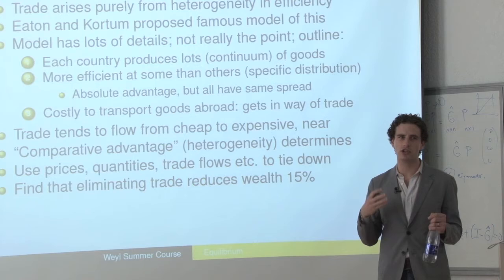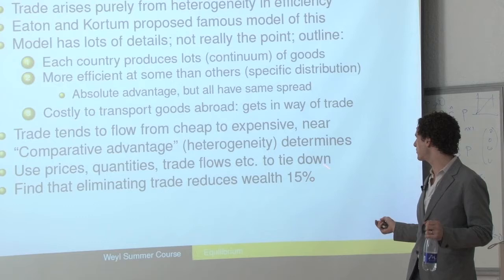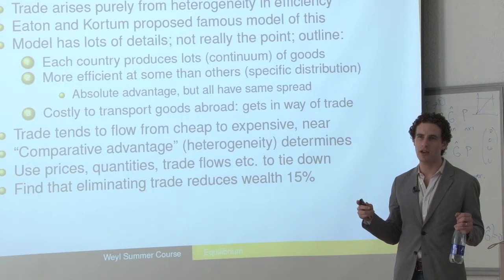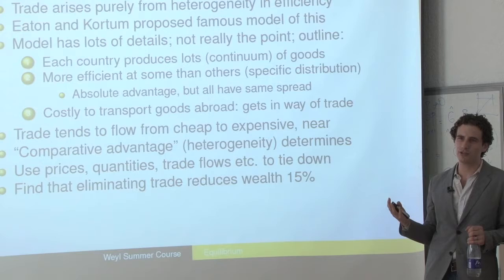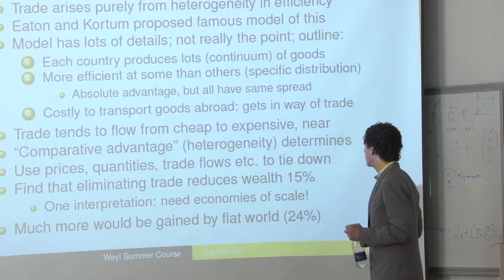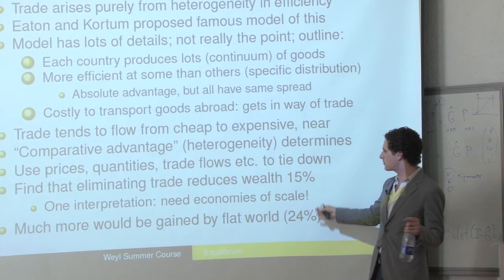That allows them to calibrate this model and calculate how much reduction in welfare we would get if there was no trade at all. They found a 15% reduction in the wealth of the world if we went to complete autarky across countries — which maybe is a surprisingly small number. One interpretation is that this model is ignoring the economies of scale benefits from trade that we talked about.